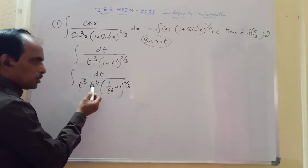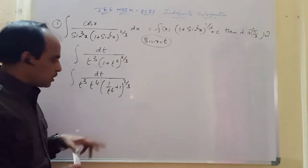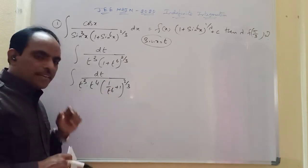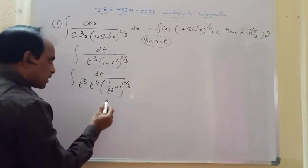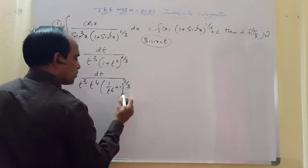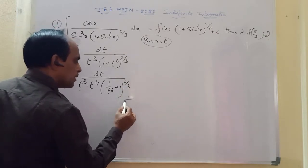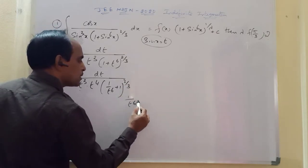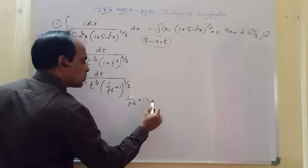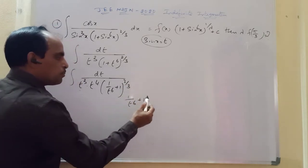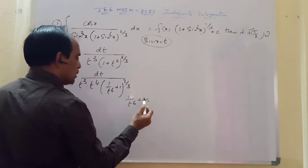Now consider the expression (1/t⁶ + 1). We apply another substitution: let y = (1/t⁶ + 1).